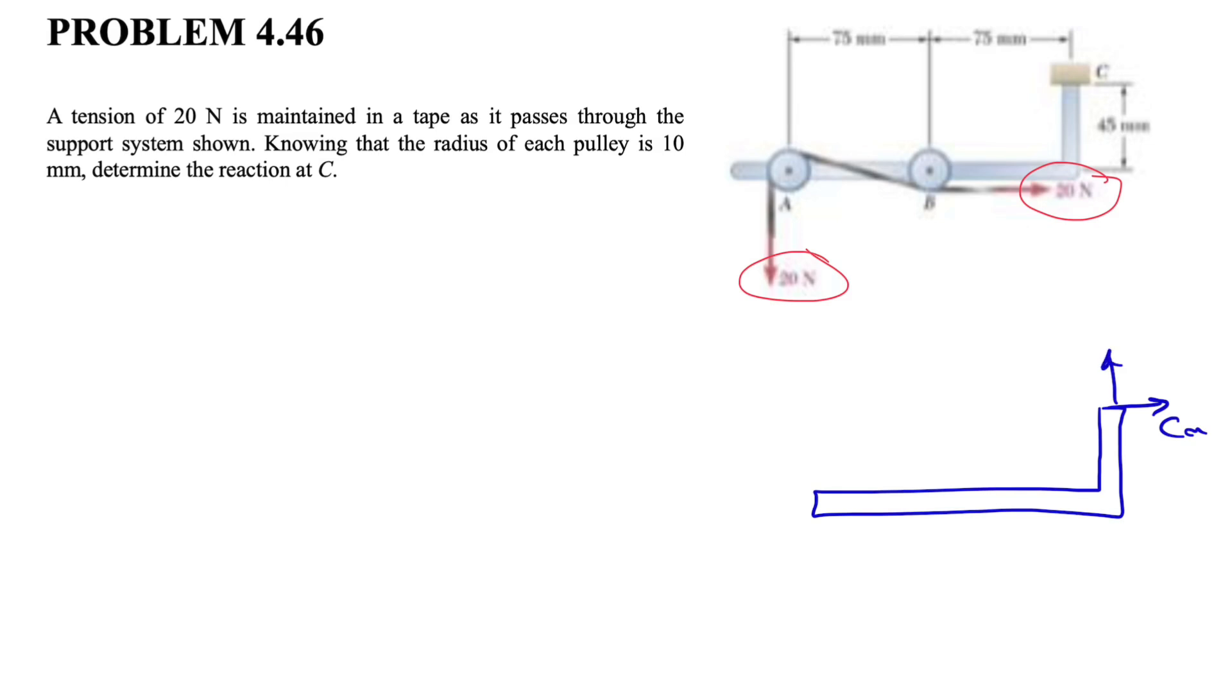Let's call it CX, this one's CY. And since it's a fixed support, we need to consider moment too. Let's call it MC. And we have these two pulleys in here, and we know the radius of each. So we have 20 Newton in here and 20 Newton force in here too. This is going to pass through this, and we have the information about all the dimensions.